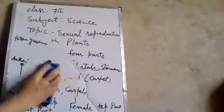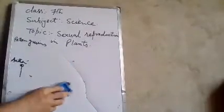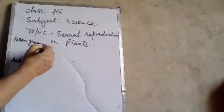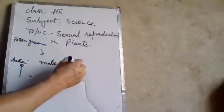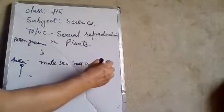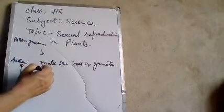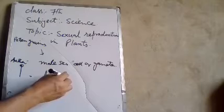The pollen grains contain the male sex cell, or male gamete. The pollen grains are light and can be carried by wind, water, or insects.